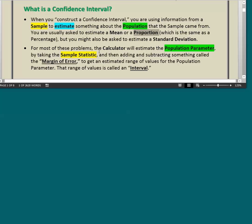For most of these problems, the calculator will estimate the population parameter by taking the sample statistic and then adding and subtracting something called the margin of error. And that will give an estimated range of values for the population parameter. That range of values is called an interval.